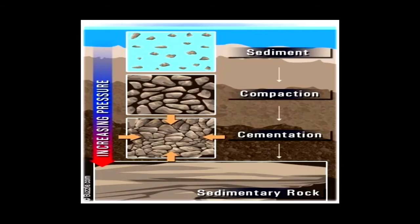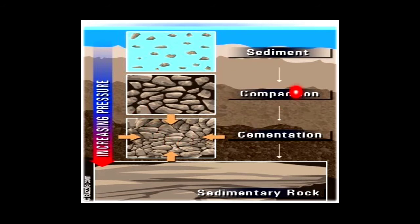Looking at the diagram: sediments are deposited and become compact under compaction, then the compounds of lime and calcium fill the gaps through the process of cementation. All together, this is known as lithification — the process by which sedimentary rocks are formed.